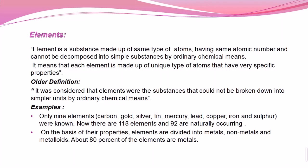In the early days, only nine elements were known: carbon, gold, silver, tin, mercury, lead, copper, iron, and sulfur. By the 16th century, 63 elements were recognized. Now there are 118 elements, of which 92 are naturally occurring.